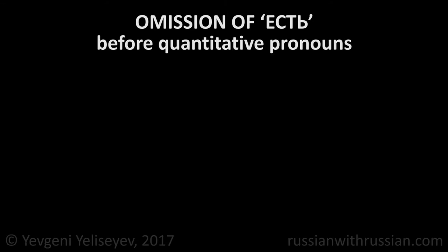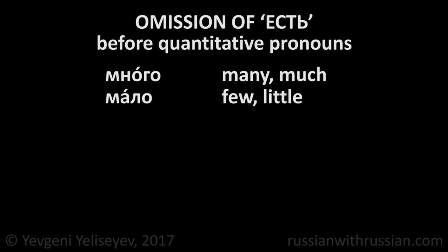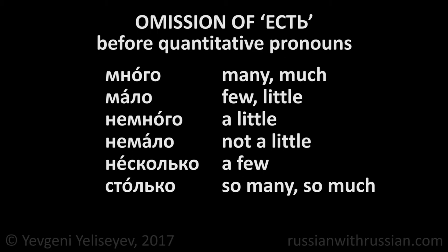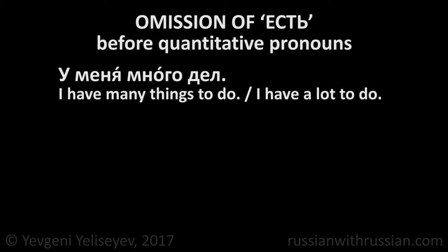Есть is often omitted before quantitative pronouns — that is, before such words as много (many/much), мало (few/little), немного (a little), немало (not a little), несколько (a few), столько (so many/so much). У меня много дел — I have many things to do, I have a lot to do. Есть has been omitted before the word много. But: у меня есть много дел, которые нужно сделать сегодня, поэтому я не смогу пойти на вечеринку — I do have many things to do today, that's why I don't have time.